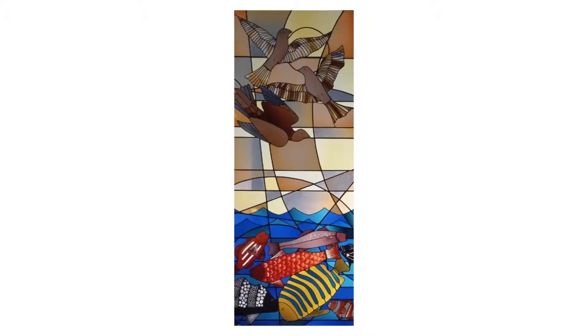On the fifth day of creation God creates animals from seeds — that is oviparous life, life that is born from eggs. What we depicted in our window for the fifth day of creation are birds in the sky and fish in the sea.